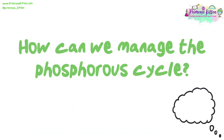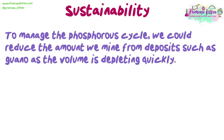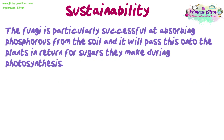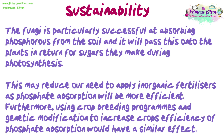How can we manage the phosphorus cycle? To manage the phosphorus cycle sustainably, we could reduce the amount we mine from deposits such as guano, as the volume is depleting quickly, and instead use organic fertilisers such as manure. Farmers can add mycorrhizal fungi to their soil, which forms a symbiotic relationship with crop roots — the fungi are particularly successful at absorbing phosphorus from the soil and pass this onto the plants in return for sugars made during photosynthesis. This may reduce our need to apply inorganic fertilisers as phosphate absorption will be more efficient. Furthermore, using crop breeding programs and genetic modification to increase crops' efficiency of phosphate absorption would have a similar effect.